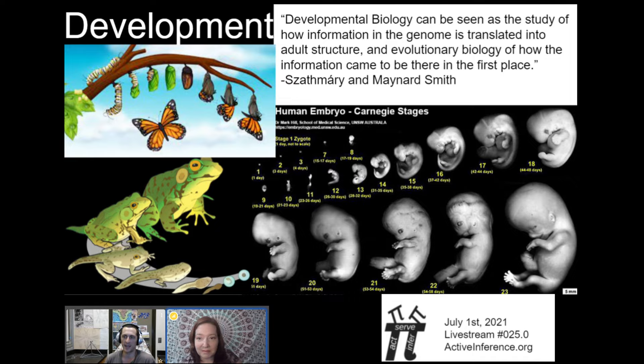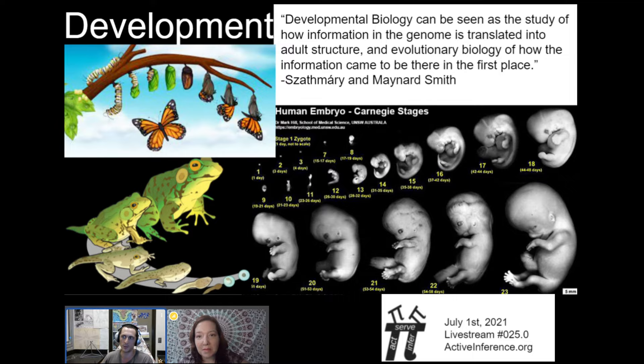It reminds me of Tinbergen's four whys, which are related to Aristotle's four whys. Why is there a foot? The easy material answer is because there's matter in the shape of a foot. But maybe you want to know something historical — over really long periods of time, it's a story about evolution, how the foot came to be selected through time. But development is just right there in the middle: it's the story for that individual of how that foot came to be.